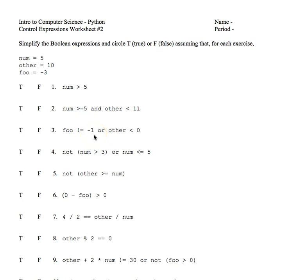Mr. Minnick, helping my beginner computer science students with Control Expressions Worksheet Number 2. On this particular worksheet, you have to assume that throughout the whole worksheet, the variable num is equal to 5, the variable other is equal to 10, and foo, which is a variable name, is equal to negative 3.